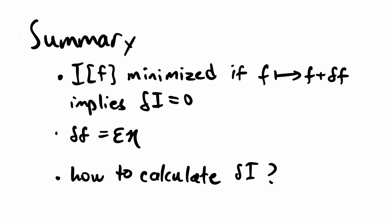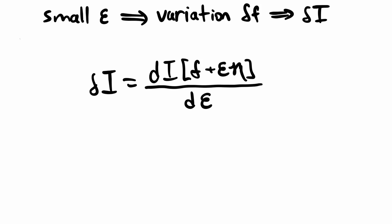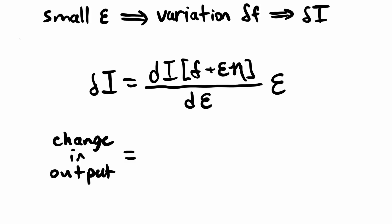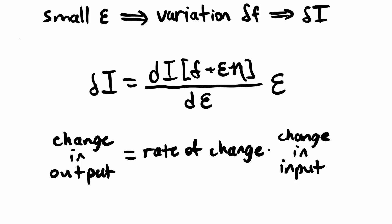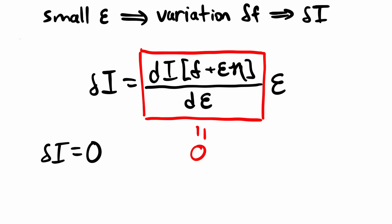Now we need to actually figure out how to calculate the variation of the functional as we vary the input function. Before, we had trouble because we didn't know how to define a rate of change with respect to a function. However, since we have defined the variation in terms of epsilon, we can utilize the calculus tools we already have. Varying a function by a very small amount is equivalent to having a very small but non-zero epsilon. Since epsilon is very small, we can just use a linear approximation. The variation in the value of the functional is approximately equal to the rate of change of the functional with respect to epsilon, multiplied by epsilon. In simpler words, change in output is approximately the rate of change times change in input. We want to minimize the functional, so we want the variation to be zero for infinitesimal variation in the input function — this requires the derivative to be zero.